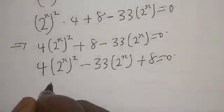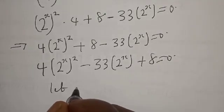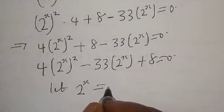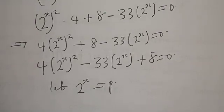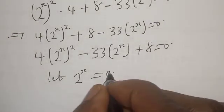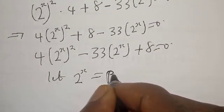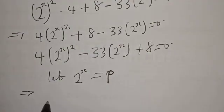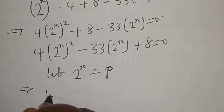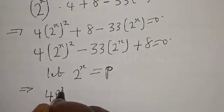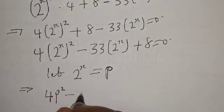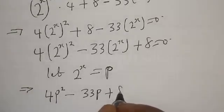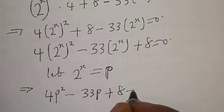Now let's say 2 raised to power x is equal to p. This implies that we have 4p squared minus 33p plus 8 equal to zero.